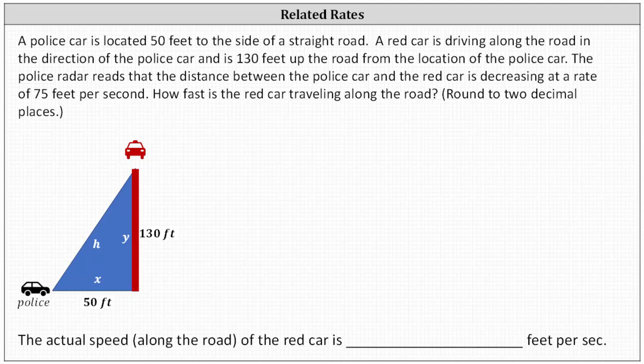A police car is located 50 feet to the side of a straight road. A red car is driving along the road in the direction of the police car and is 130 feet up the road from the location of the police car. The police radar reads that the distance between the police car and the red car is decreasing at a rate of 75 feet per second. The question is how fast is the red car traveling down the road? Let's look at the diagram below.